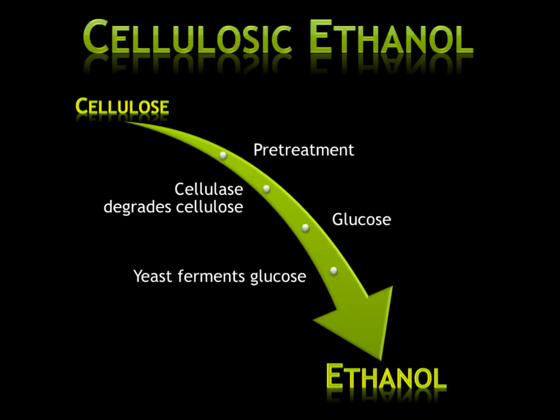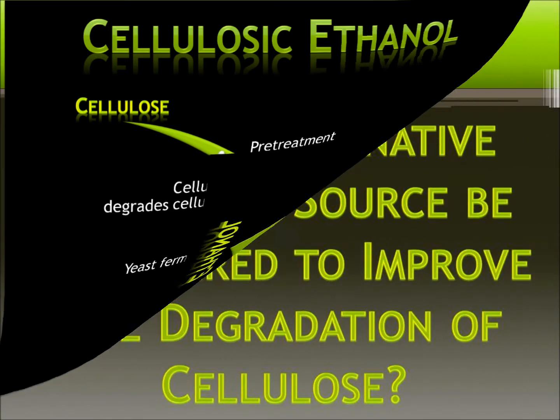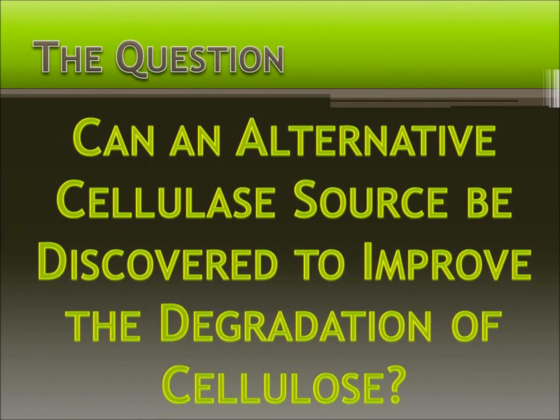The depletion of petroleum prompts the exploration of cellulosic ethanol. It uses cellulase, an enzyme found in fungi, to harvest glucose from cellulose. How can the cellulosic ethanol process be improved for widespread use?